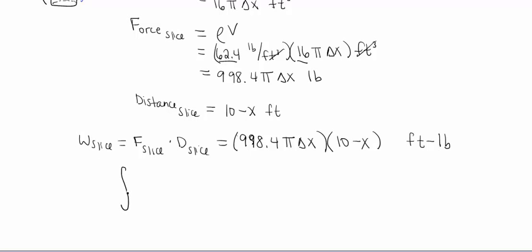Alrighty, so I'm gonna have an integral, since we're gonna be adding up a bunch of different pieces together. I'm gonna be integrating all of this stuff here that we just found for our work. So I'm gonna go ahead and factor that 998.4π out front, since it's a constant, and it's just gonna make our integral look a lot nicer. Okay, then I'm gonna have 10 minus x. And then we're gonna be integrating with respect to x. So instead of writing Δx, as I almost started to do there, let's go ahead and change that into a dx, since we're gonna be integrating.